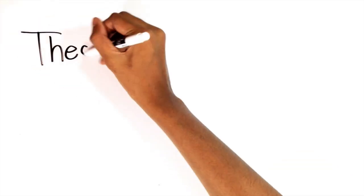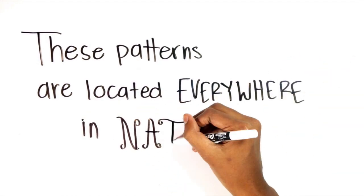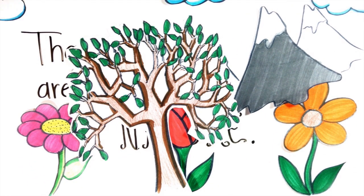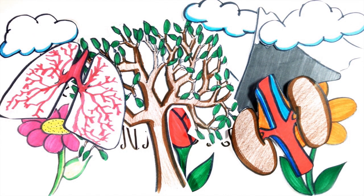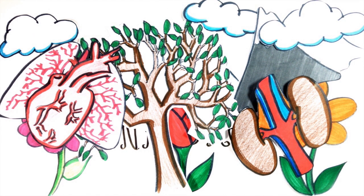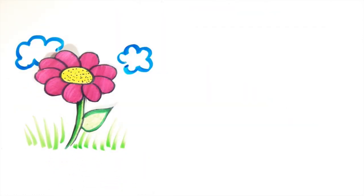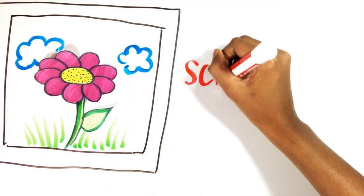All around us there's an invisible, limitless world made up of repeating patterns. They're located everywhere in nature: flowers, mountains, trees, cloud movements, blood vessels, the kidneys, our lungs, and the heart. It's an unending paradox that creates the most beautiful art and at the same time provides the answers to some of the most difficult problems we face in science, math, and technology.